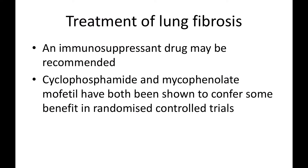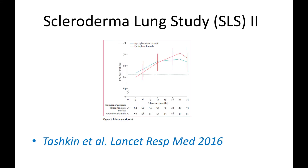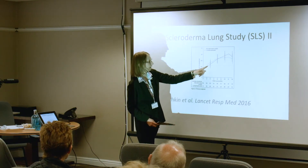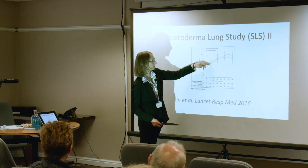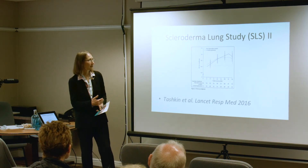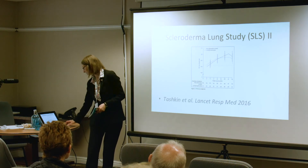So how do we treat lung fibrosis? If it's severe or getting worse, most doctors would recommend an immunosuppressant drug — if appropriate for you — to dampen down the immune system. The ones used are cyclophosphamide and a tablet called mycophenolate mofetil. This paper — a big study published last year — shows the forced vital capacity lung function test, and you can see that with either treatment the lung capacity improved slightly. It wasn't dramatic, but it didn't get worse, providing evidence for giving these immunosuppressant treatments.